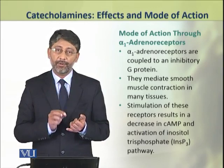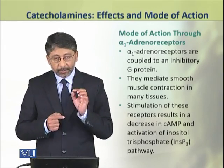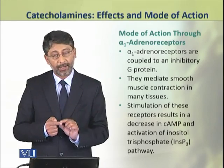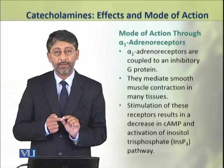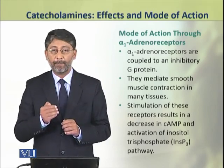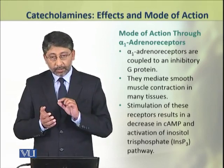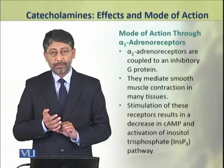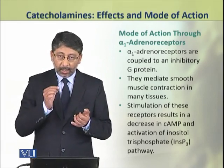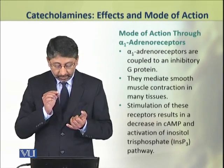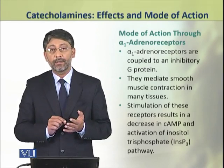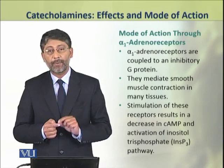Through alpha-1 adrenoreceptors: these receptors are coupled to a G-protein which is inhibitory in its actions. When we say a G-protein is inhibitory in a hormonal pathway, it means it decreases the concentration of cyclic AMP after its activation. These alpha-1 adrenoreceptors mediate smooth muscle contraction in many tissues. After their stimulation, the concentration of cyclic AMP is reduced in the cell, and also the inositol trisphosphate pathway is activated.